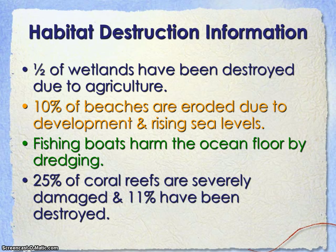We are having issues with the destruction of aquatic biomes. We've lost over half of our wetlands due to agriculture — whether it be swamps, marshes, or estuaries. The more we grow, the more we need food, and so we farm and irrigate these areas for those purposes.